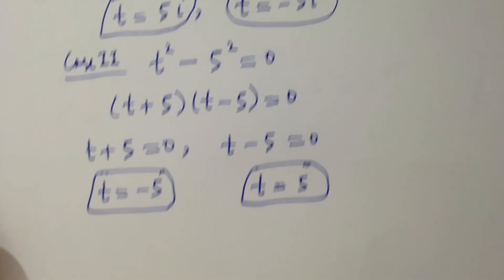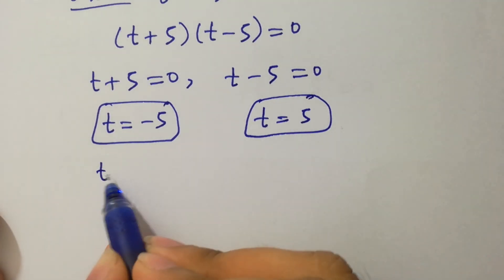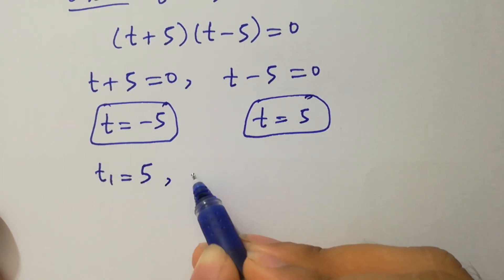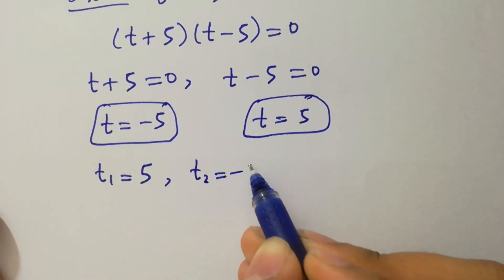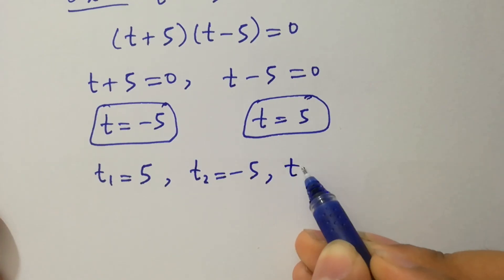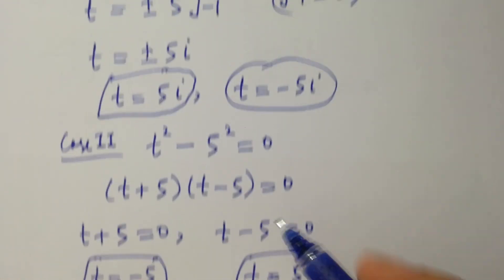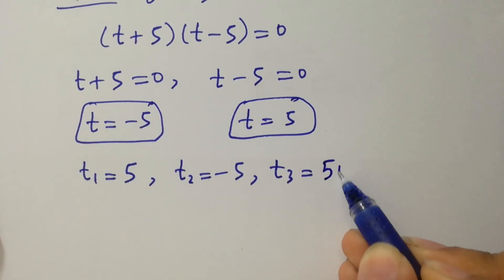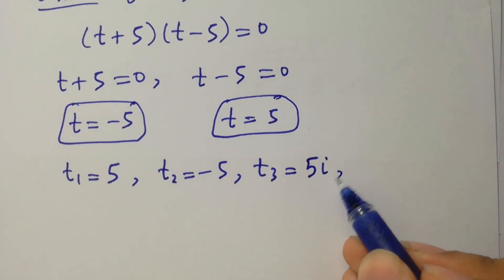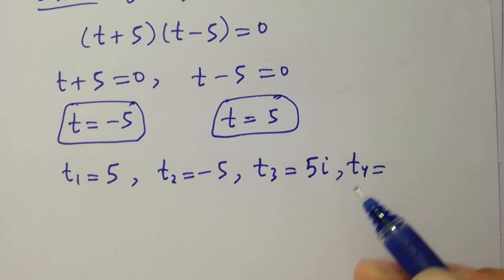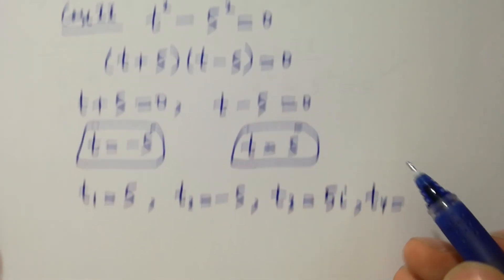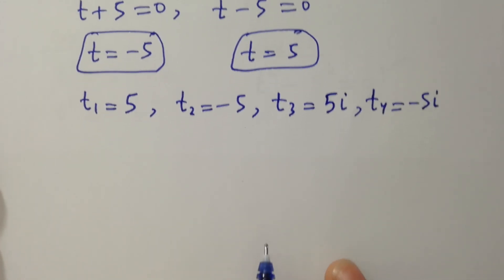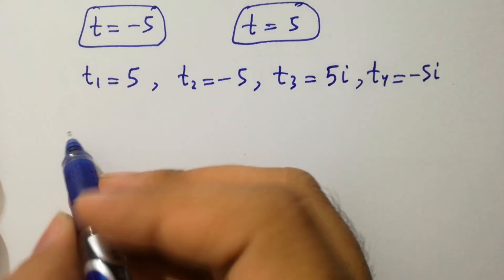So we have four values: t₁ equal to 5i, t₂ equal to minus 5i, t₃ equal to 5, and t₄ equal to minus 5. In the next step, I am going to verify.